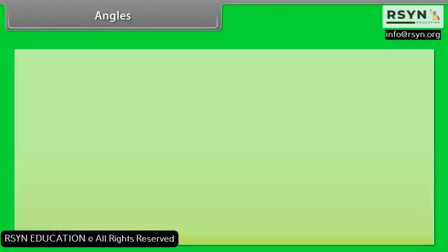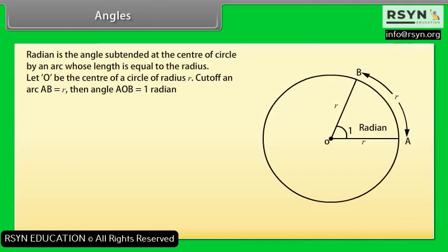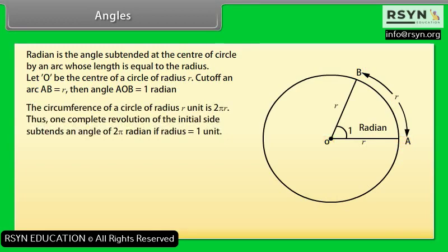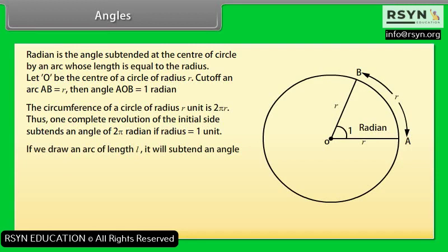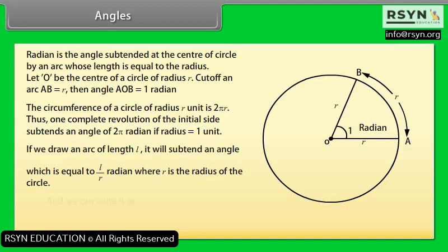How to measure the radian? A radian is the angle subtended at the center of a circle by an arc whose length is equal to the radius. Let O be the center of a circle of radius R; cut off arc AB equal to R — then angle AOB equals 1 radian. The circumference is 2πR, so one complete revolution subtends 2π radians. If an arc of length L is drawn, it subtends an angle L/R radians, giving us L = R·θ.